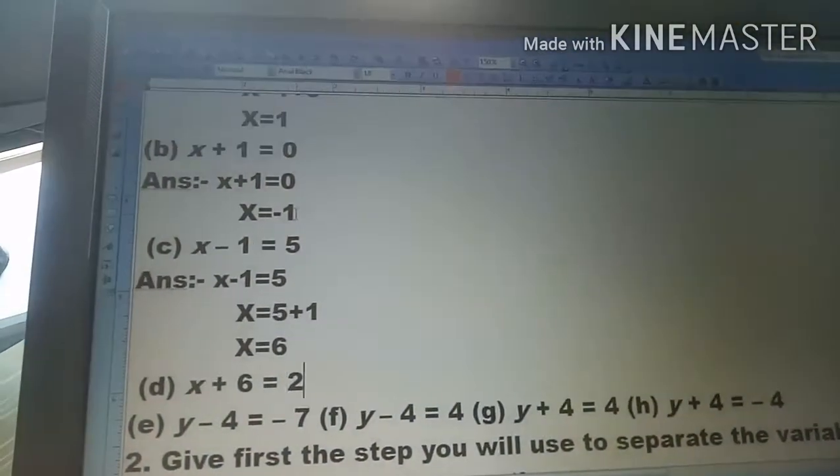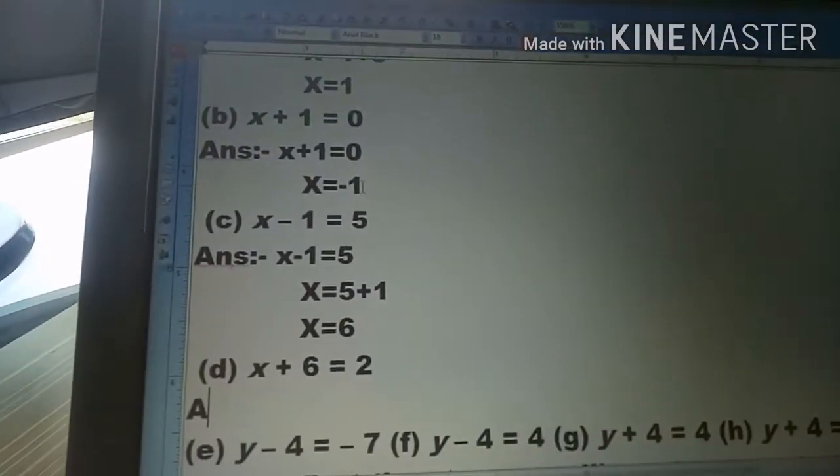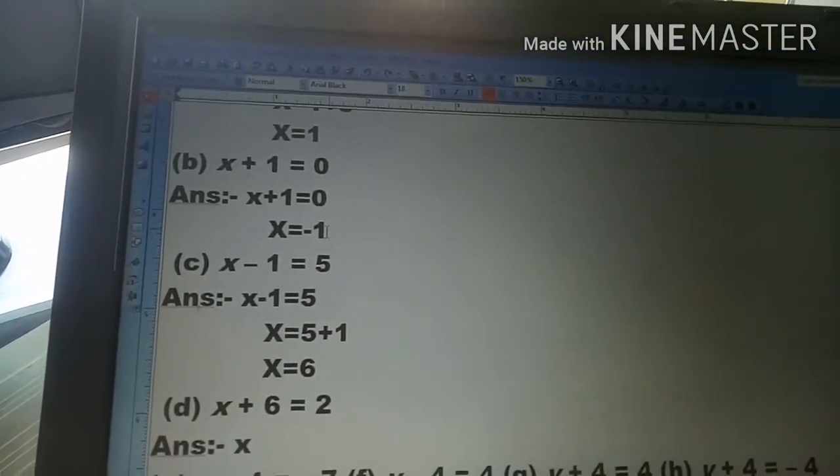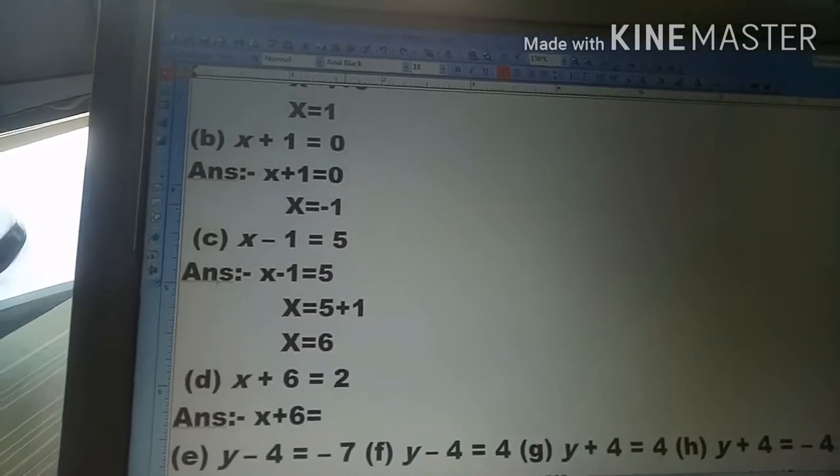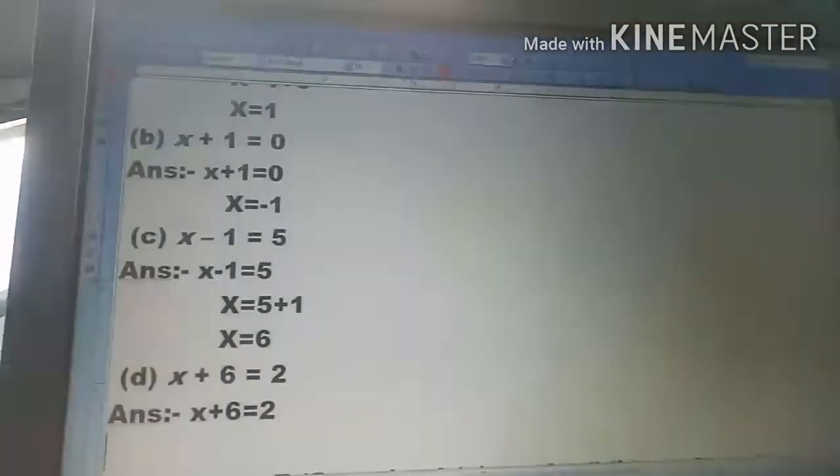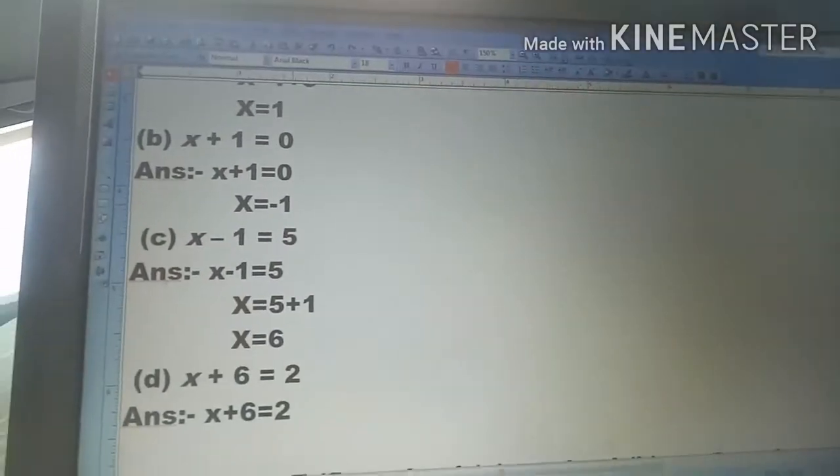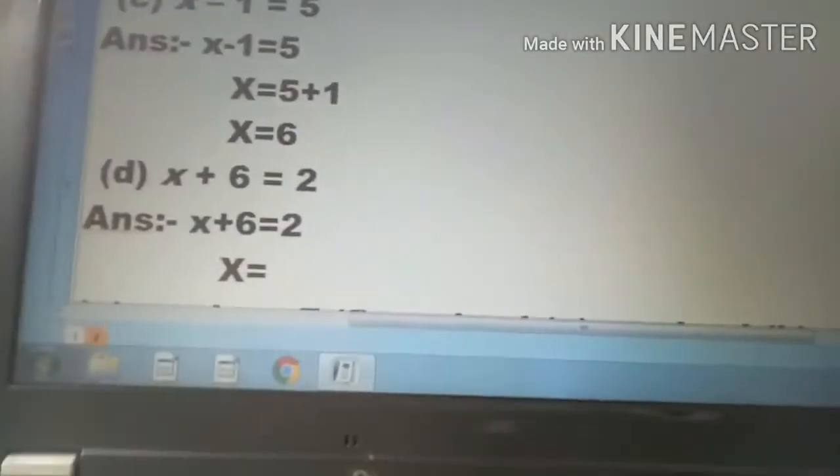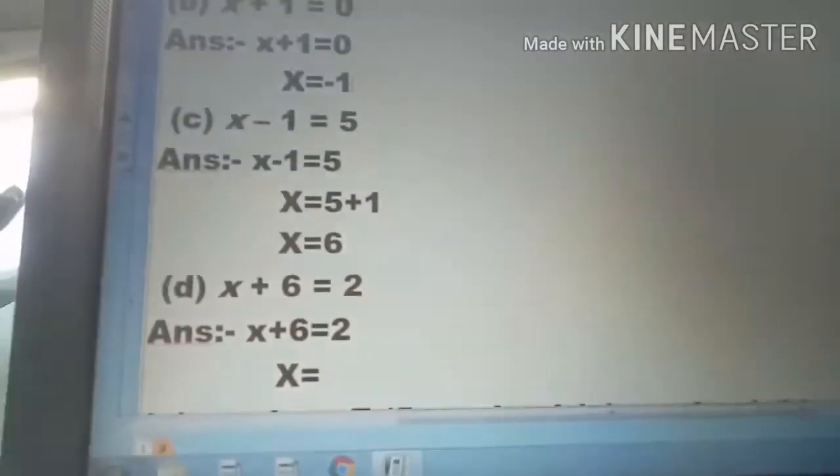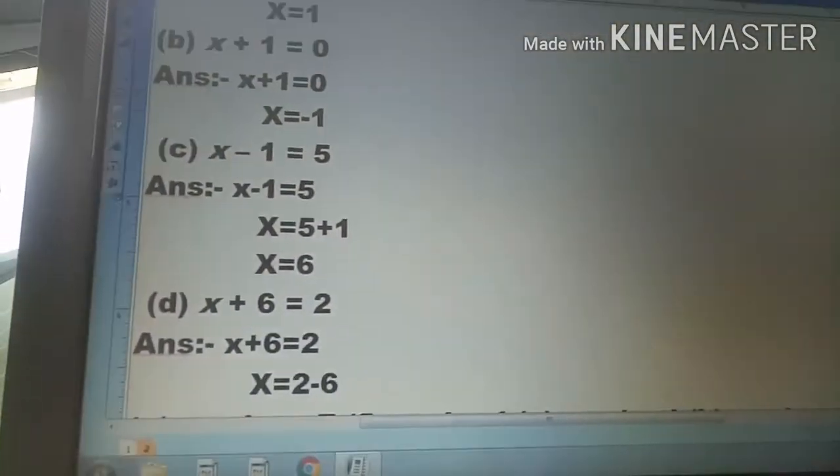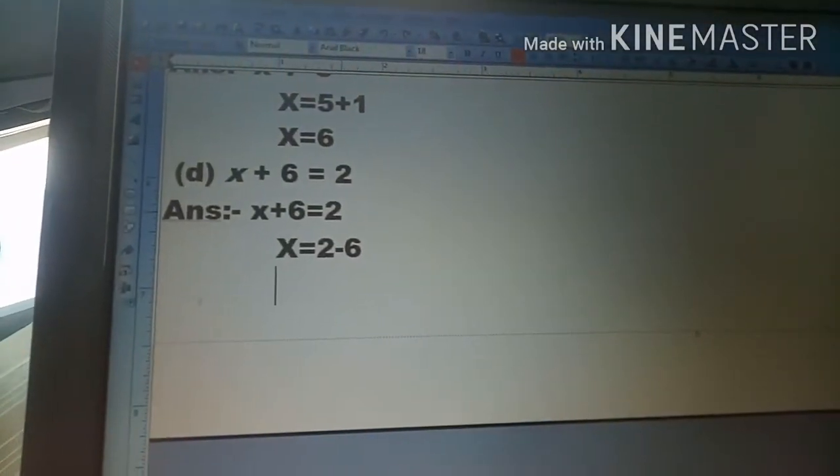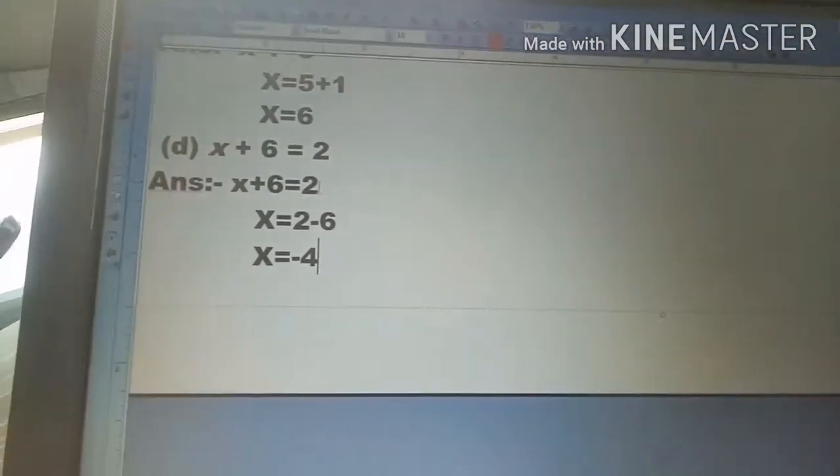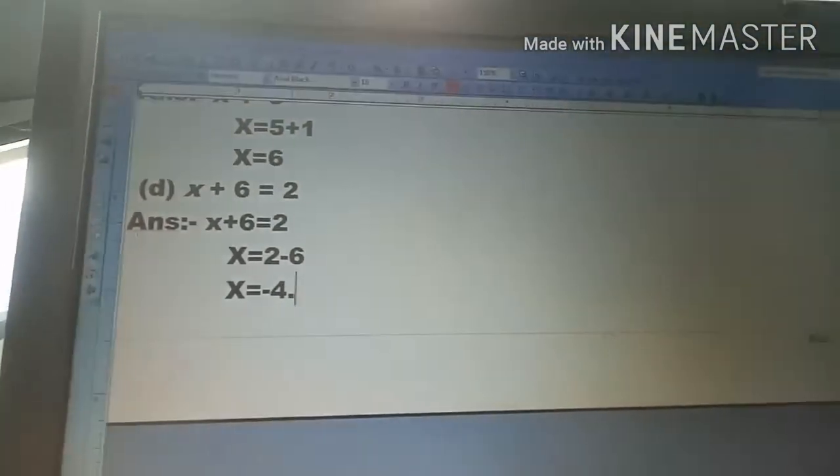Now for question (d), the answer: As it is, x plus 6 is equal to 2. So x is equal to 2 minus 6. 2 minus 6 equals minus 4. This is the x value.